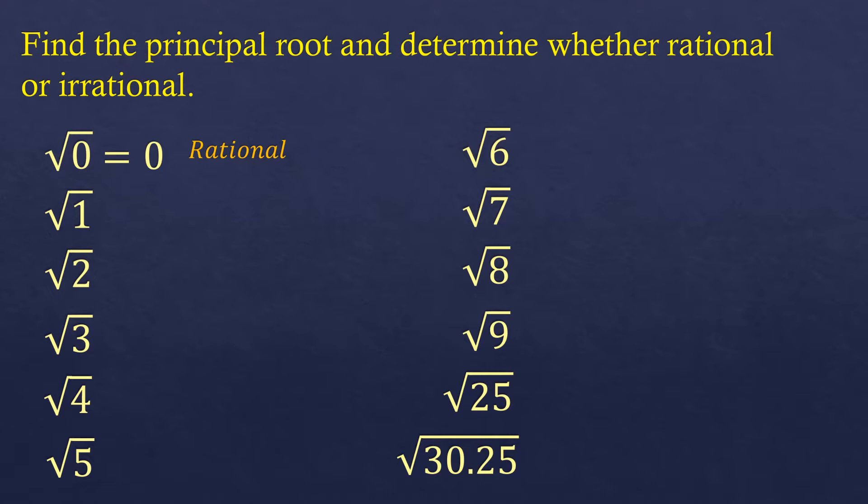For the square root of one, there are actually two roots: positive one and negative one, because both multiplied by themselves equal one. However, we are asked for the principal root, which means we only consider the positive root. So the principal square root of one is positive one.